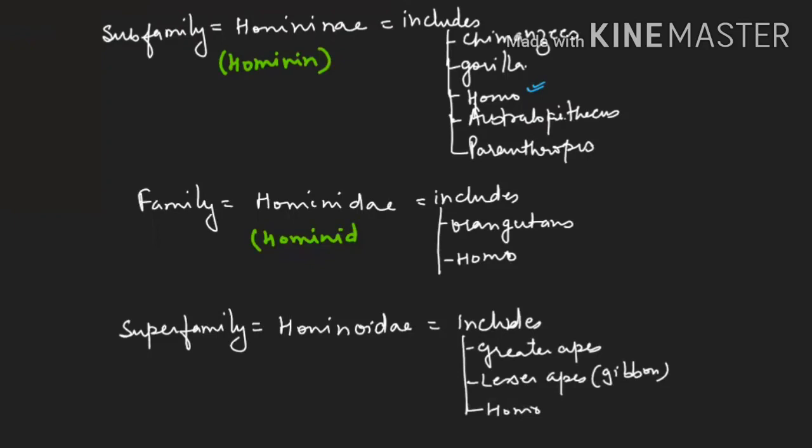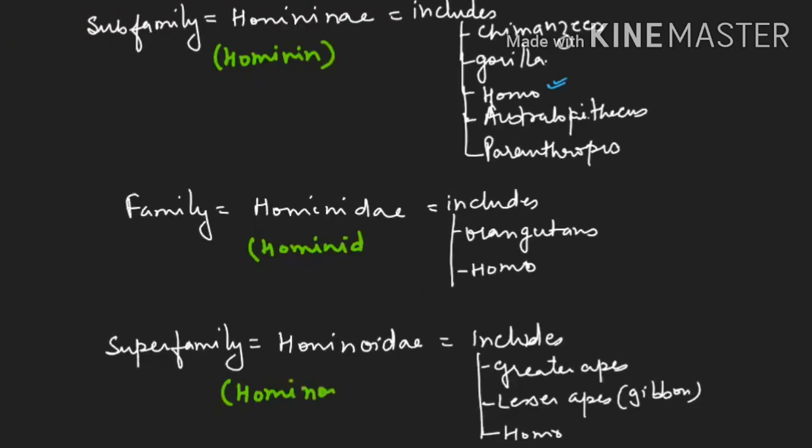So when we are on the superfamily level we have to use the term hominoid. We have to be very clear depending upon which group we are referring to. If we are on the subfamily we will call we are homonin, at family level we will call it hominid, and at superfamily level we will call it hominoid. I hope this confusion will be clear to you.